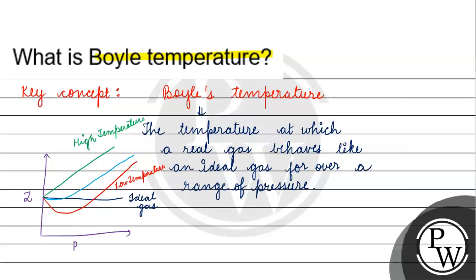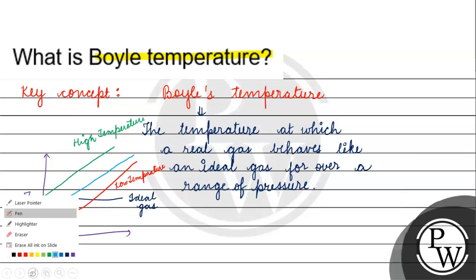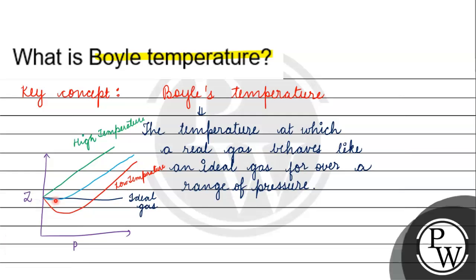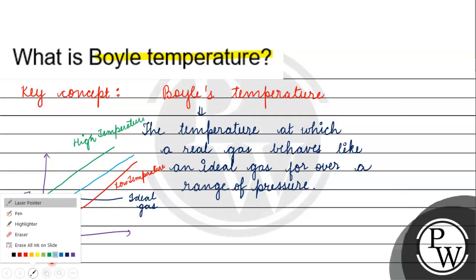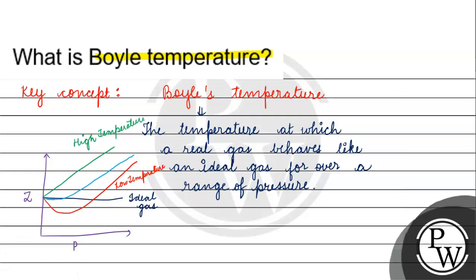So at Boyle's temperature, the real gas can behave like an ideal gas over a range of pressure. Okay, I hope you understood it well. Thank you and all the best.